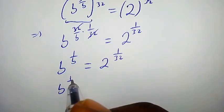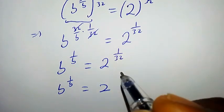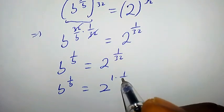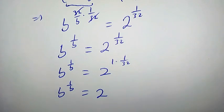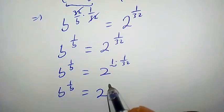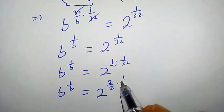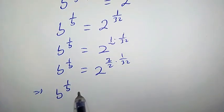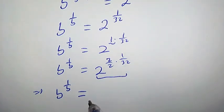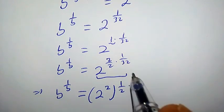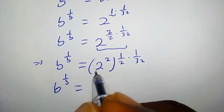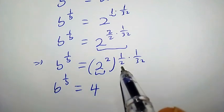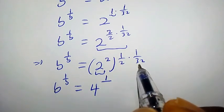b to the power of 1 over b is equal to 2 to the power of 1 over 32. Now, 1 over 32 can also be written as 1 times 1 over 32. We can rewrite 1 as 2 over 2, so it becomes 2 over 2 times 1 over 32. We can rewrite this as 2 to the power of 2 times 1 over 2 times 1 over 32. So b to the power of 1 over b is equal to — what is 2 to the power of 2? That is simply 4.